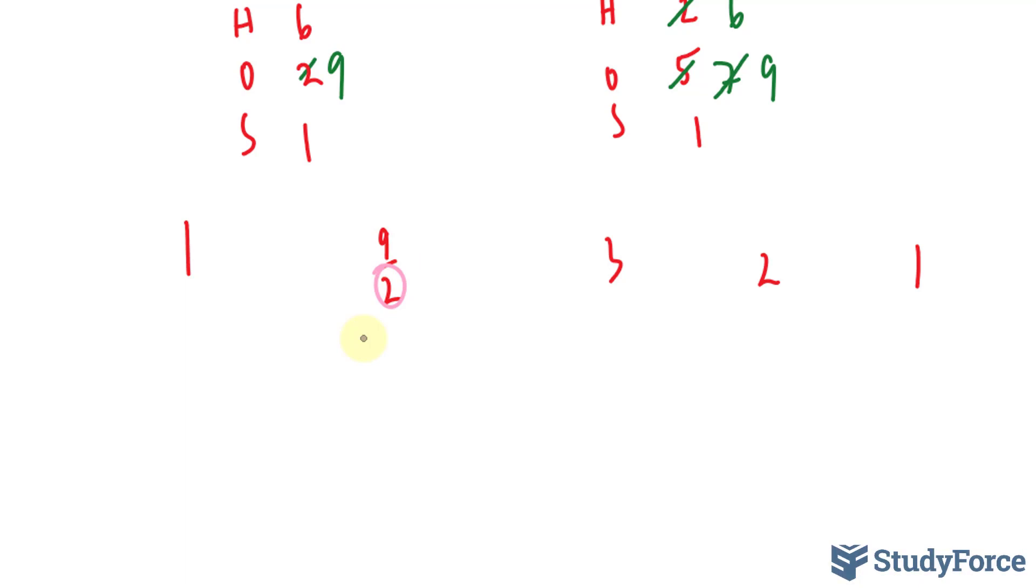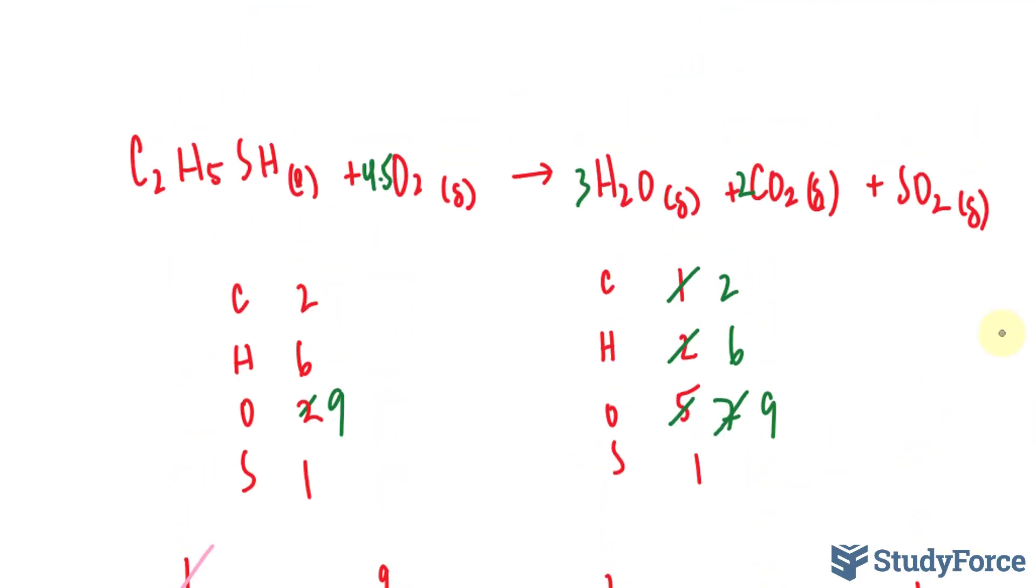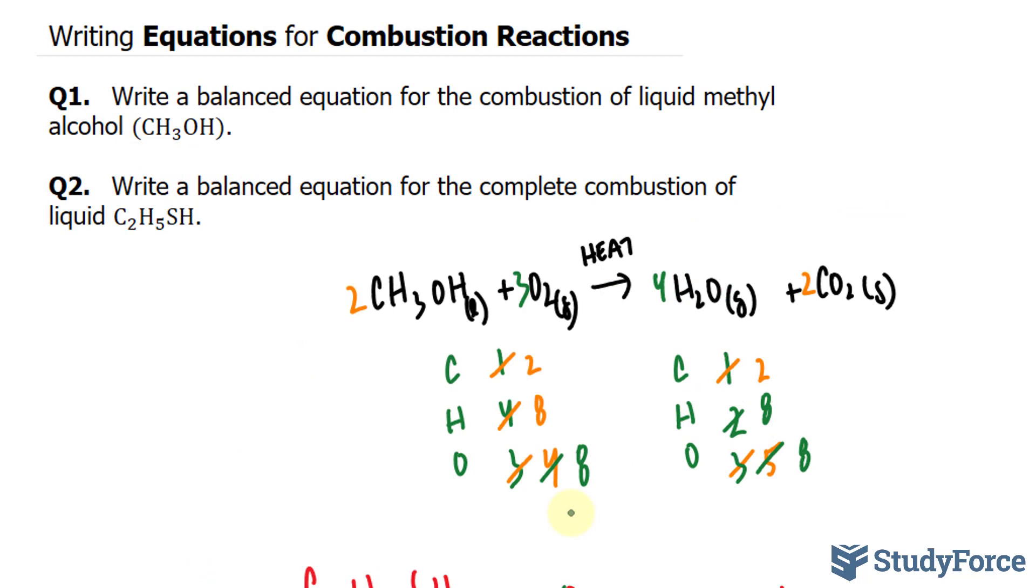To clear the denominator of this 2, I need to multiply each of these numbers by the lowest common denominator, which in our case is simple, it's 2. So multiplying this by 2, I end up with 2, this becomes 9, this becomes 6, 4, and 2. So if I place these numbers as the coefficients of each of these chemicals, I end up with my balanced chemical equation, and that is how to write equations for combustion reactions.